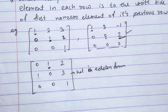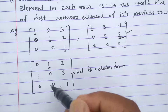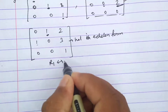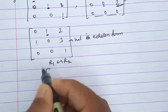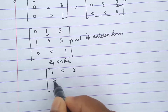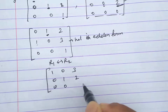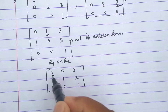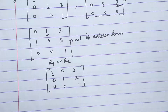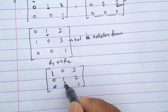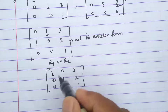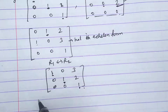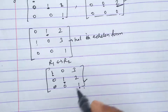We can convert this matrix to echelon form by row transformation. If we interchange R1 and R2, we get: first row [1, 0, 3], second row [0, 1, 2], third row [0, 0, 1]. Now the first non-zero element in row 1 is column 1, in row 2 it is column 2 (to the right), and in row 3 it is column 3 (to the right). All conditions are satisfied, so this matrix is now in echelon form.